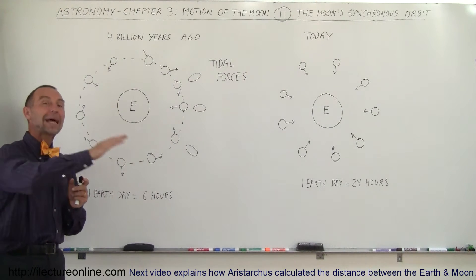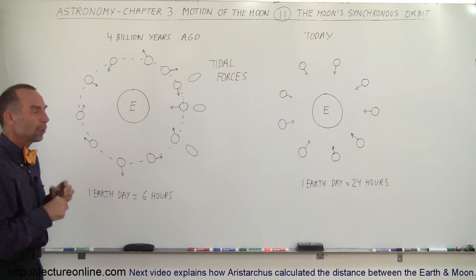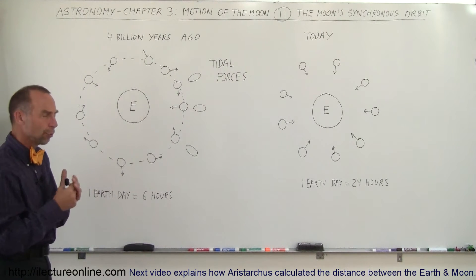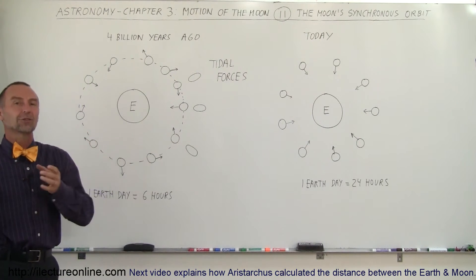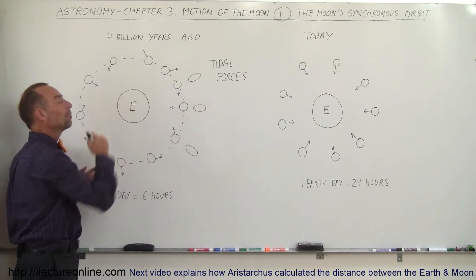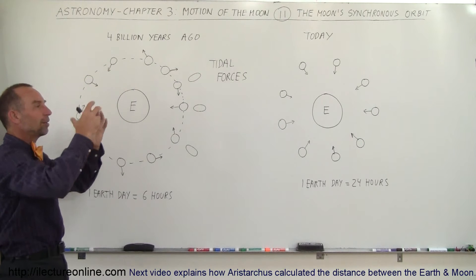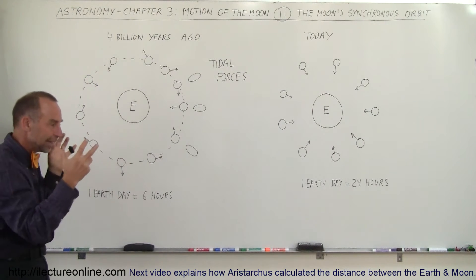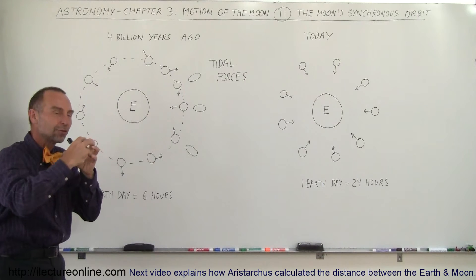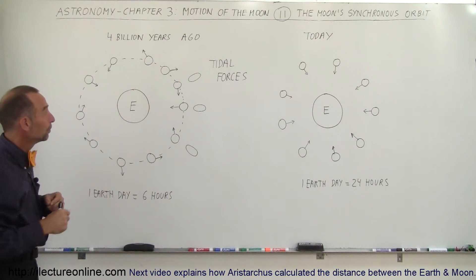If we go far back in history, let's say 4 billion years or so, not long after the Moon was formed — and the Moon was formed most likely through a giant collision of a big object with the Earth — it took off a piece of the Earth. All that debris went off into space, and because of the gravitational attraction of the Earth, it stayed close enough, coalesced into a sphere, and began to revolve around the Earth. That became our Moon.